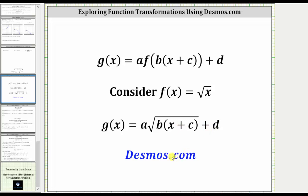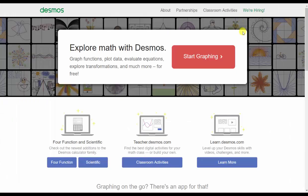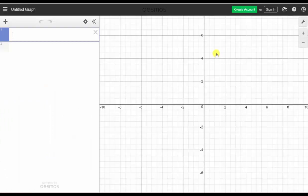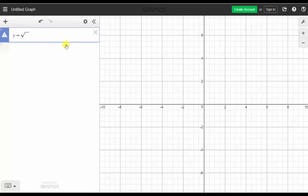So the first step is to go to Desmos.com and click start graphing. In number one, we'll enter y equals sqrt for square root and then x, enter.